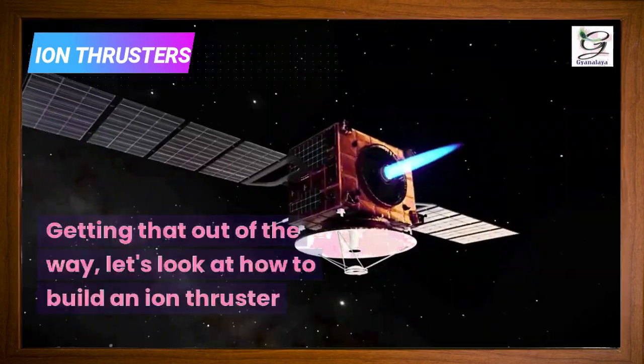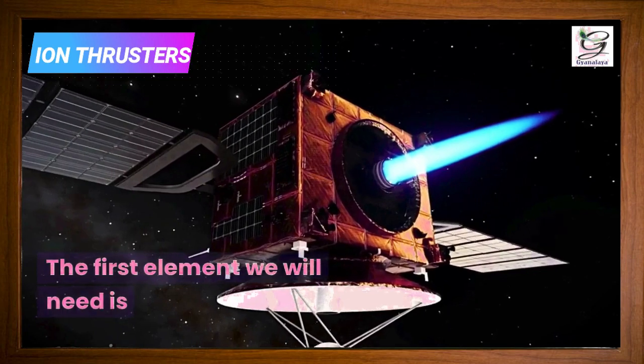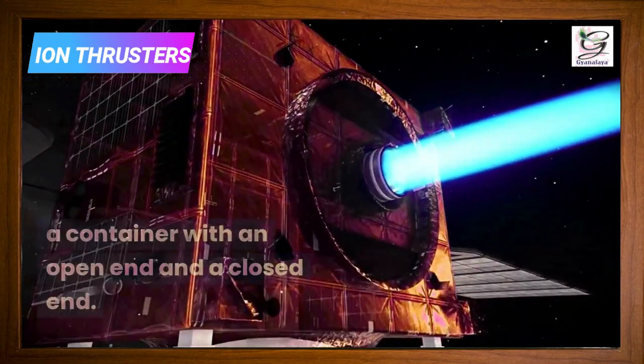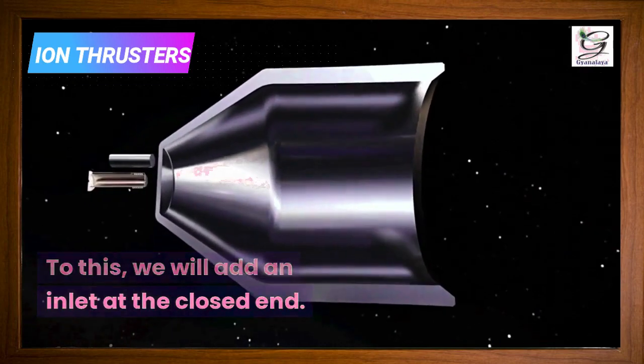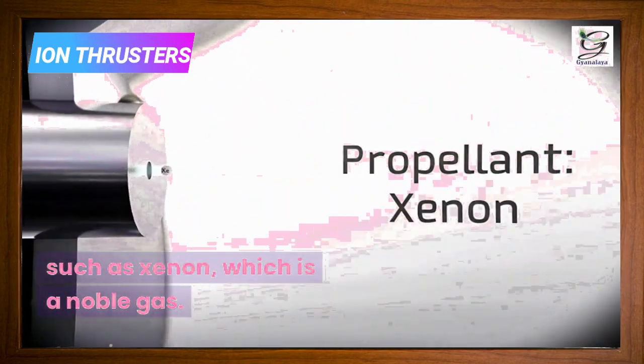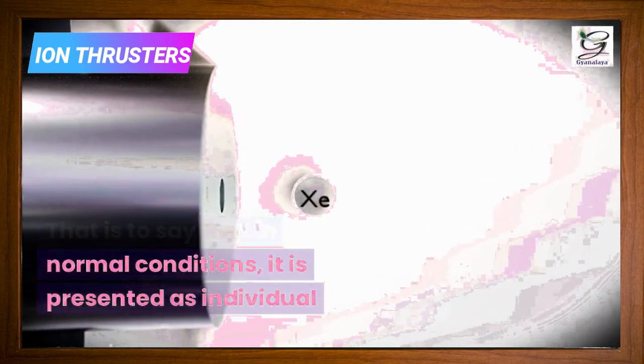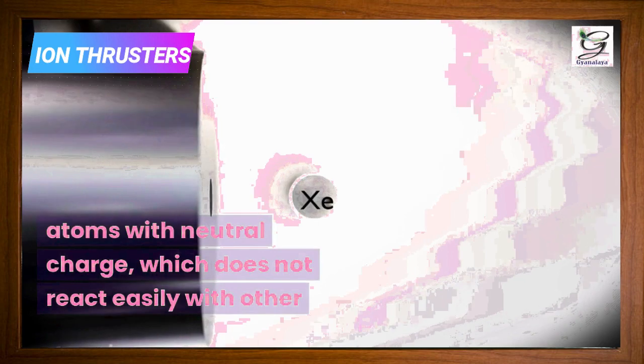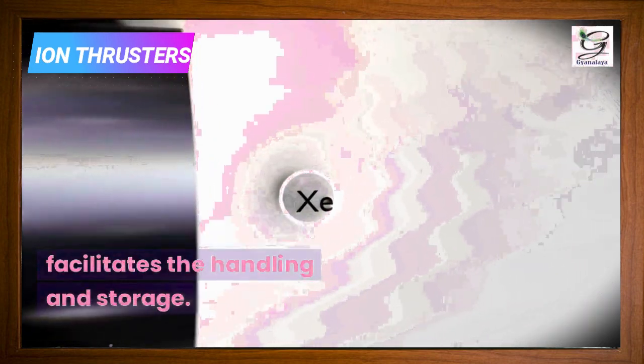Getting that out of the way, let's look at how to build an ion thruster and the effect each of its components has. The first element we will need is a container with an open end and a closed end. To this we will add an inlet at the closed end, through which we will introduce a gas such as xenon, which is a noble gas. That is to say that in normal conditions it is presented as individual atoms with neutral charge, which does not react easily with other elements, and therefore facilitates the handling and storage.